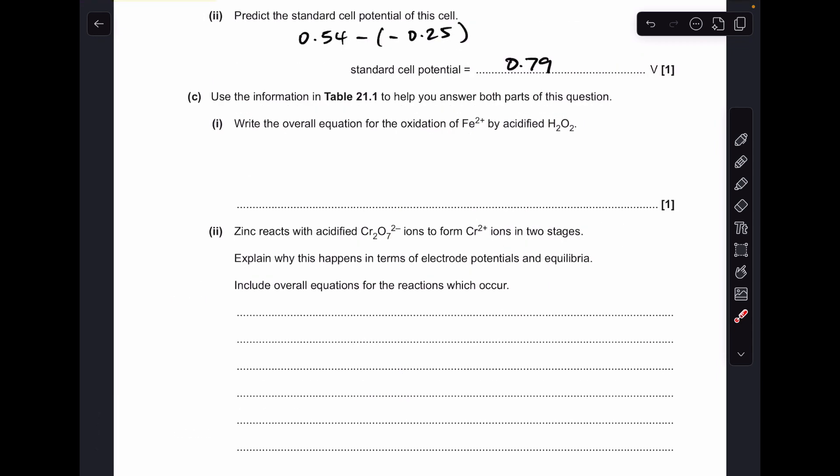To work out the cell potential, it's the most positive electrode potential minus the least, so it's coming out at 0.79 volts for this one.